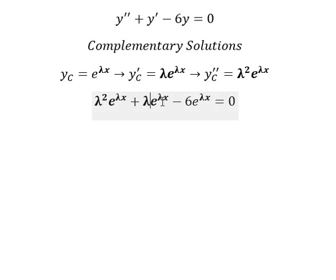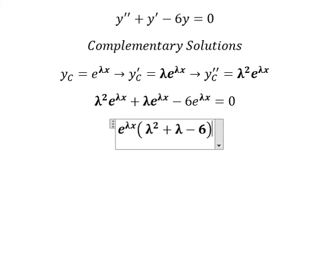E to the power of lambda x, we can do factorization, so we have lambda squared plus lambda minus 6. And now we need to find the solutions of this one.